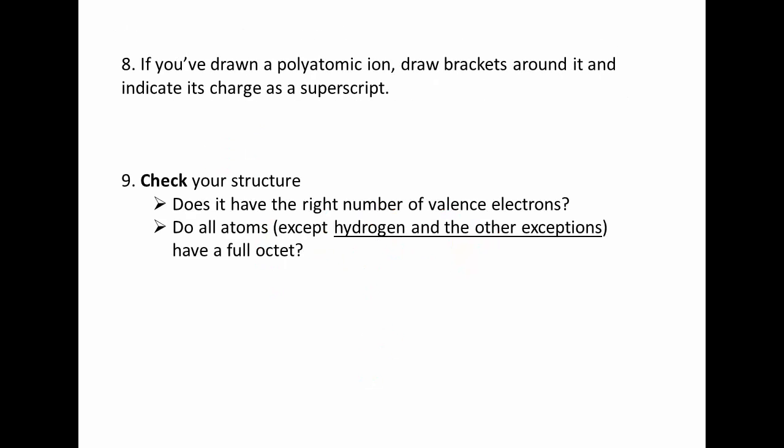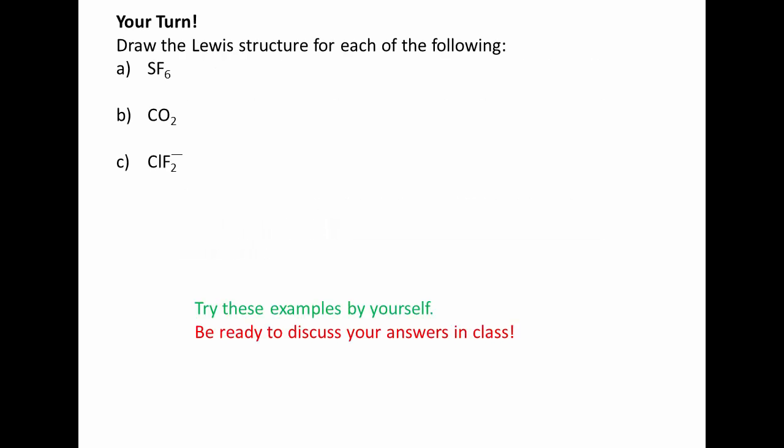The last thing you should do is really check your structure. Does it indeed have the right number of valence electrons? And do all the atoms have a full octet? Now, hydrogen and the other exceptions that we talked about won't have a full octet, but every other atom should have eight electrons. So, now it's your turn. Draw the Lewis structures for each of the following. I have three structures and I want you to try these by yourself. And we're going to discuss them in class when you get there. See you later.